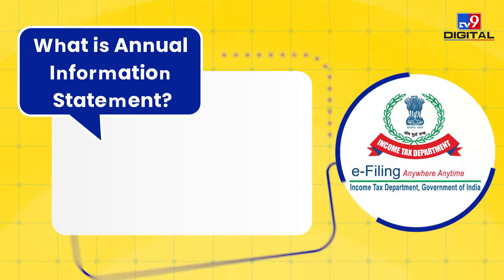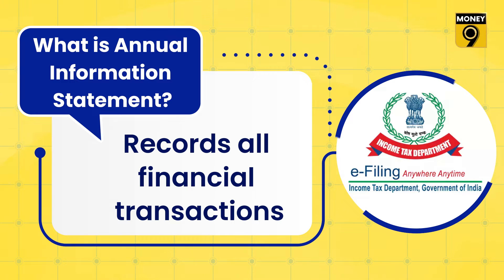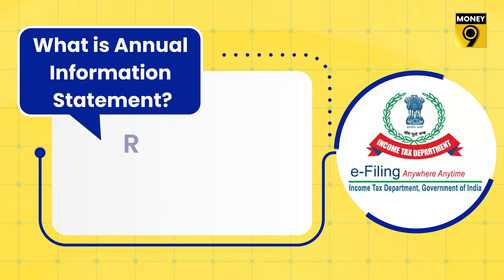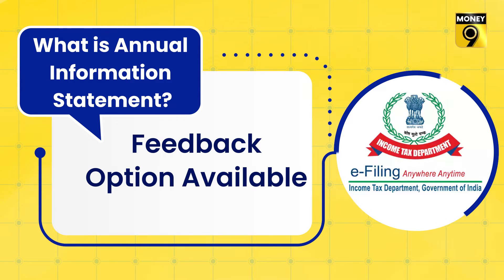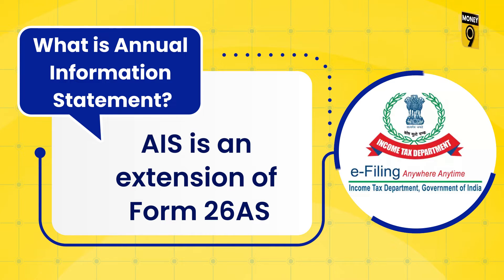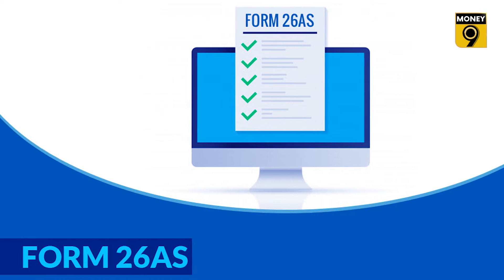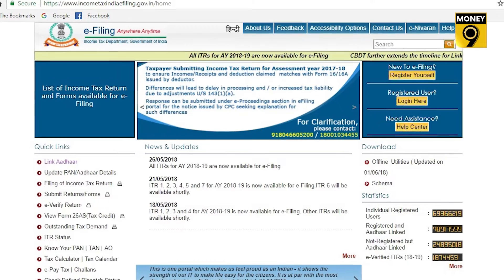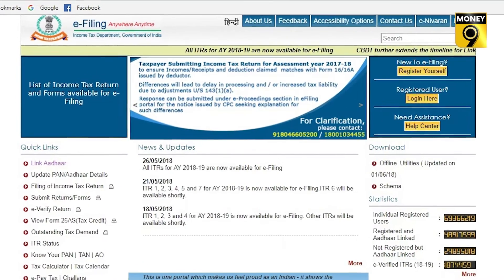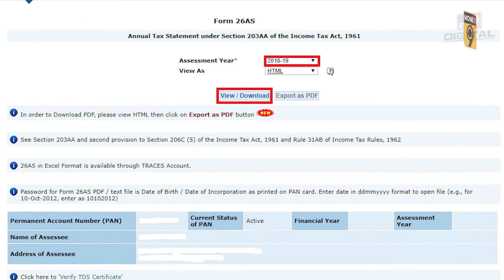So what is the Annual Information Statement? AIS records all the financial transactions of the taxpayers and also provides an option to submit feedback. AIS is an extension of Form 26AS. Form 26AS includes purchase of property during the whole year, details of high-value transactions, and TDS and TCS transactions.